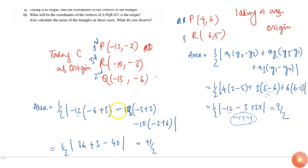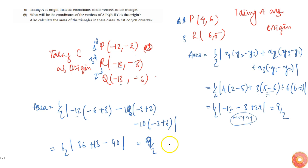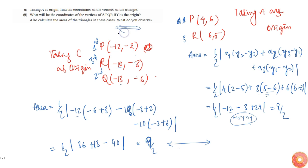So this also gives 9 by 2. As you can see, whatever reference point you take, a triangle has the same area — that is what we have to observe here. Even if the coordinate system changes, the area of the triangle doesn't change.